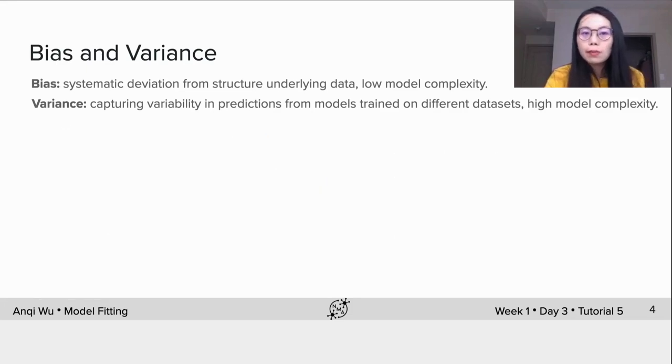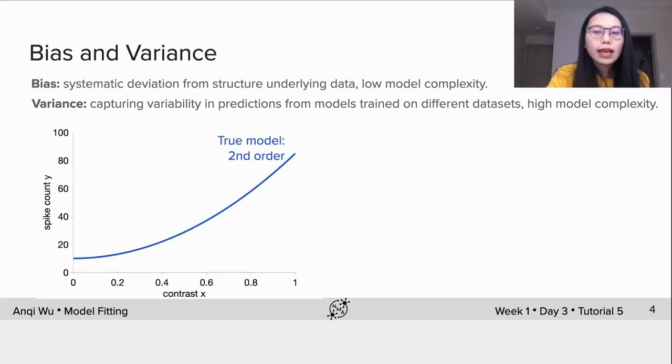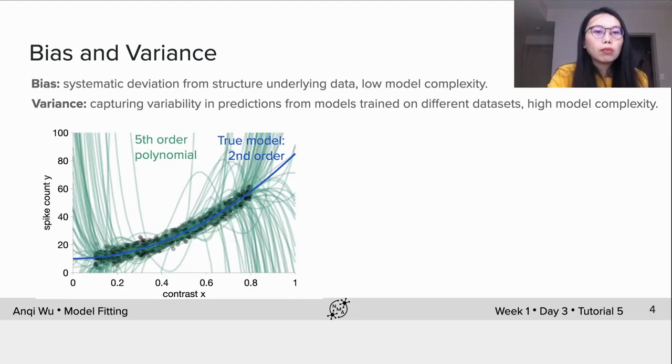We can also carry out a similar generating procedure for fifth order polynomial. Again, we have this true second order polynomial. We sample some data from the model and fit a fifth order polynomial to it. You can see the green curve perfectly goes through almost all the data points. Repeat the same generating and fitting procedure. We can plot all the polynomial fits together.